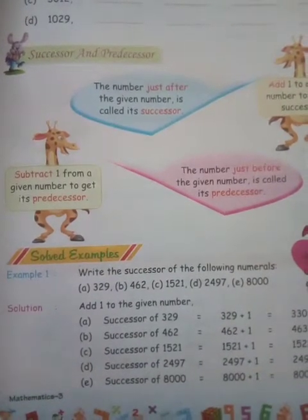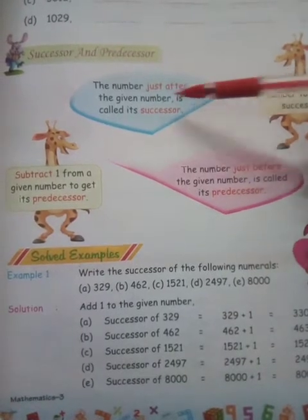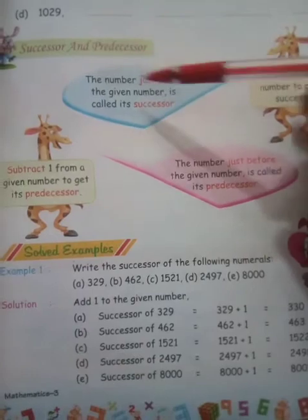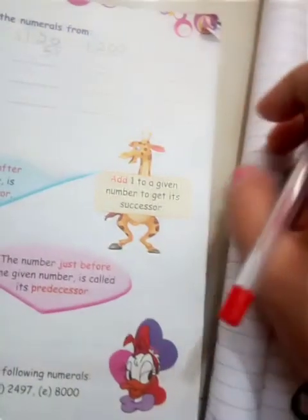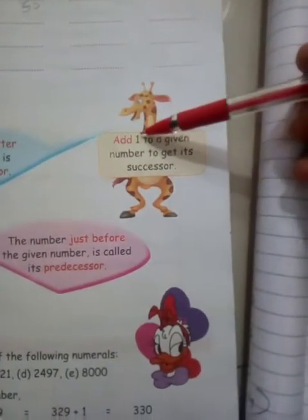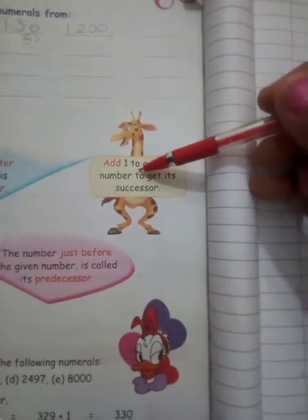What do you mean by successor and what do you mean by predecessor? The number just after the given number is called the successor. For example, if 29 is given, what comes just after 29? To find the successor, we have to add one to the given number.